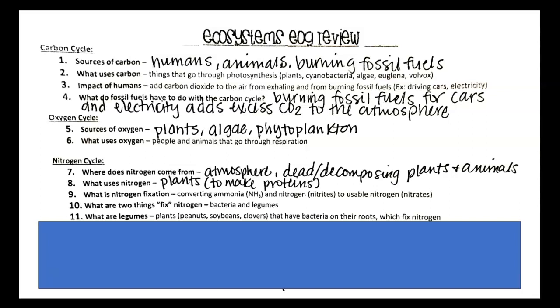And so the bacteria will convert the nitrogen from the atmosphere, which is N2, into ammonia, NH3, which is a usable form of nitrogen.